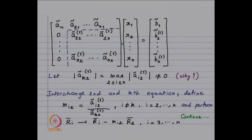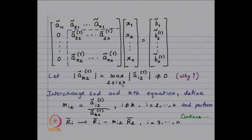Now, whatever we have done for the n×n matrix, we are going to work on the submatrix of order n−1. Our aim is to introduce zeros in the second column below the diagonal. We look at the maximum of the elements among ã_{22}^{(1)} up to ã_{n2}^{(1)}, so suppose it is |ã_{k2}^{(1)}|, maximum over 2 ≤ i ≤ n. We do not want to disturb the first row, so we are working only on this (n−1)×(n−1) matrix. Since A is invertible, again this will not be equal to zero.